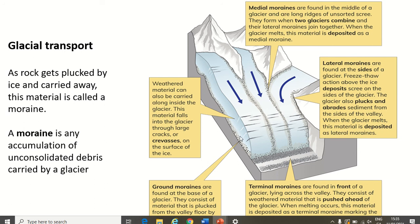The third type is a ground moraine. You can't really see a ground moraine in real life — in this cross-section diagram we can see it, but in reality they're at the bottom of the glacier. These ground moraines are what cause abrasion — they act like sandpaper that erodes the valley as the ice moves downwards.